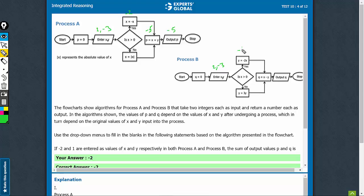So, y is equal to minus 4. q is equal to x minus y. x is 2 and minus y would be plus 4. So, 2 plus 4 is 6. Output q is equal to 6.